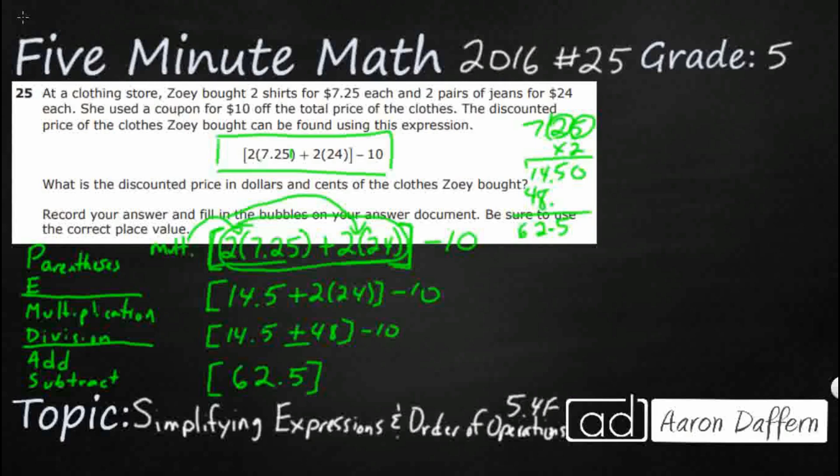Obviously, I don't need those brackets anymore, but we'll just keep that to remind ourselves of what we did. We multiplied first with parentheses, then we used the addition. Now, I need to subtract 10. That is going to simply take away 10. Here's going to be 52.5. And we need to make sure we do that correctly on our little bubble sheet here. We'll do 52.5.